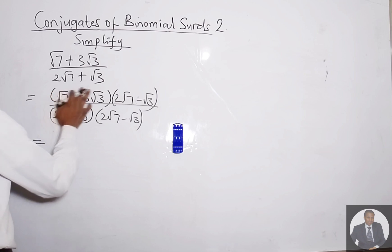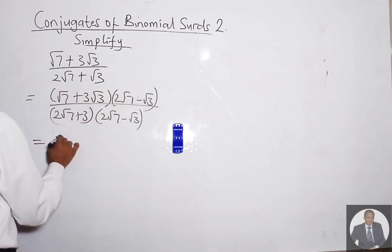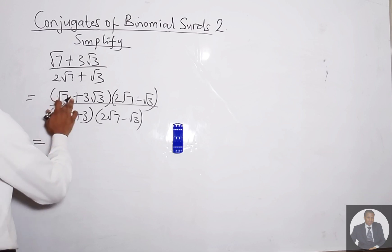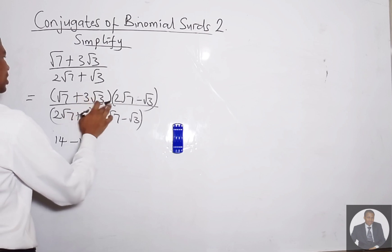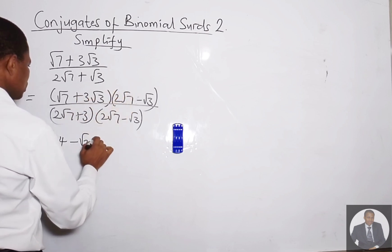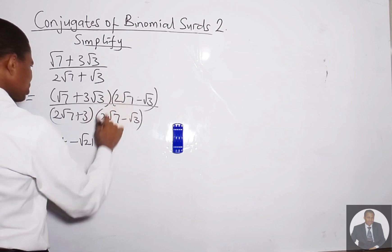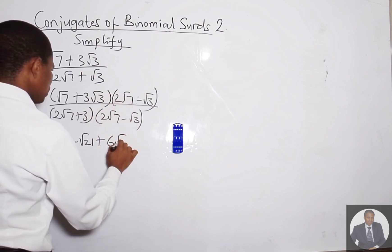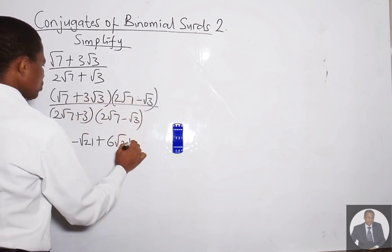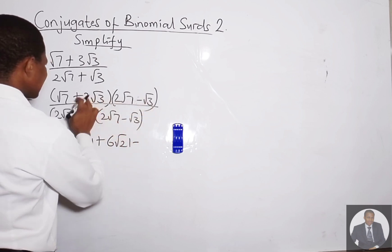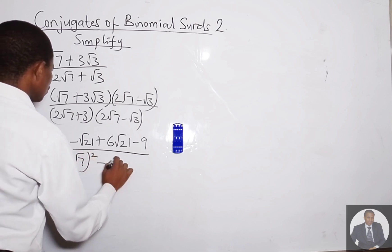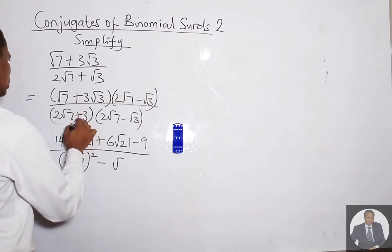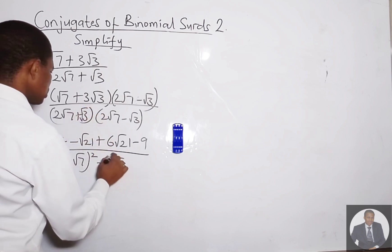Expanding the numerator: √7 times 2√7 is 2×7 = 14. Then √7 times (−√3) is −√21. Plus 3√3 times 2√7 is 6√21. Then 3√3 times (−√3) gives −3×3 = −9. All over (2√7) squared minus (√3) squared.